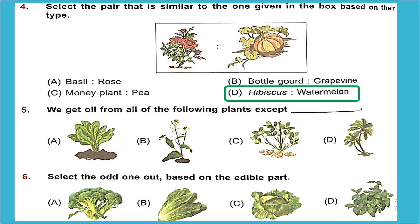Question 5: We get oil from all of the following plants except which one? A is spinach, B is mustard, C is groundnut, and D is coconut. Out of these, only the spinach plant does not yield any oil. So option A is the right answer.